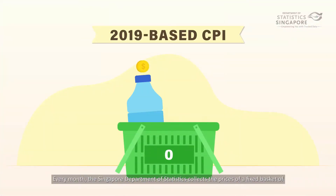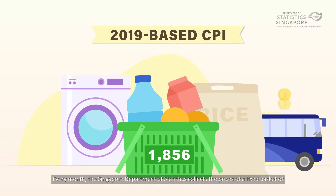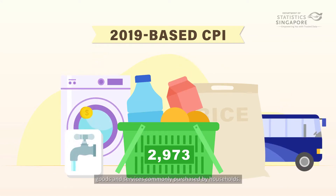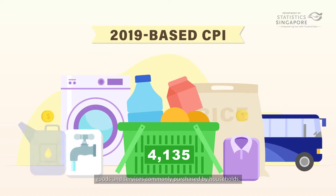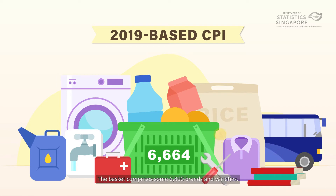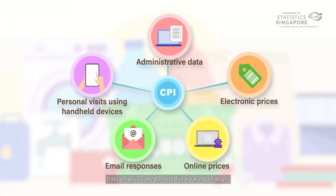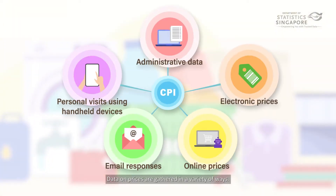Every month, the Singapore Department of Statistics collects the prices of a fixed basket of goods and services commonly purchased by households. The basket comprises some 6,800 brands and varieties. Data on prices are gathered in a variety of ways.